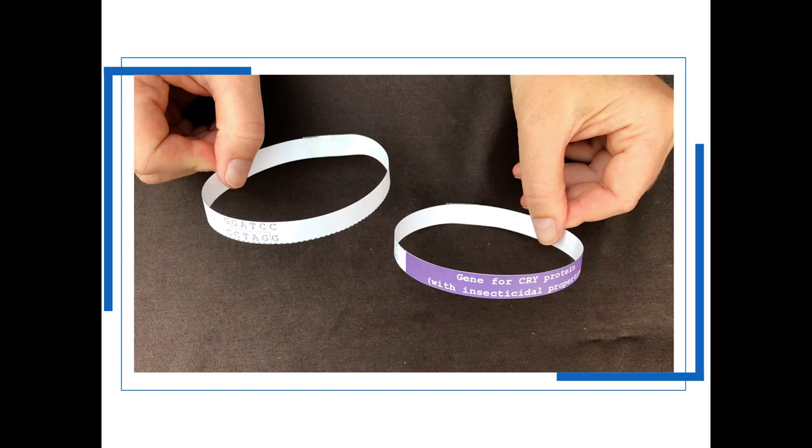So you'll end up with a round plasmid shown in white on the left and you'll end up with a model of the bacterial chromosome shown on the right with the gene of interest for the cry protein.